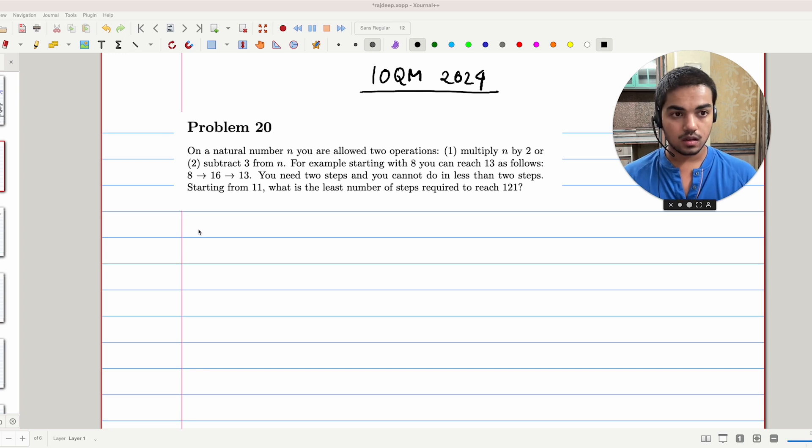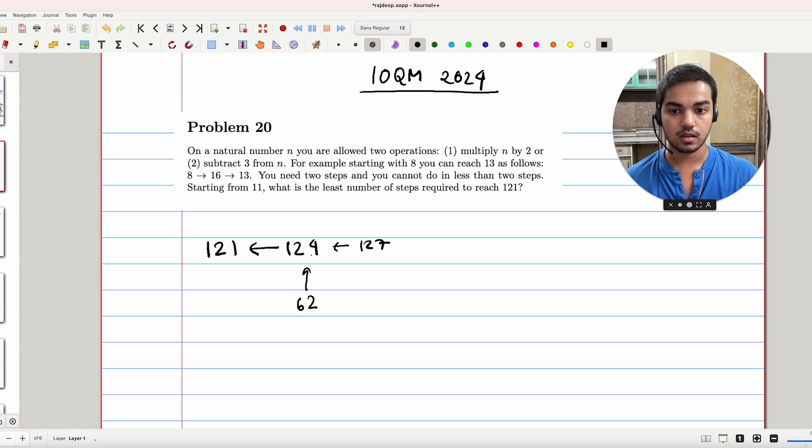Now, we start off by making the following observation. To reach 121, the only way to do that is by reaching 124 first, because 121 is odd. You cannot double your way to 121. To reach 124, you have two options: either reach 127 first and then subtract 3, or double 62 and get 124. But 127 can't be reached organically. You can't double something to reach 127. So your only option is to somehow reach 130 and then take two steps to reach 124 and then 121. To reach 130, you have two choices: either double from 65 or reach 136.